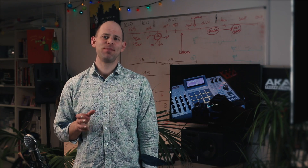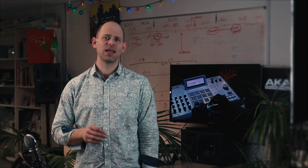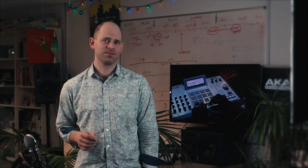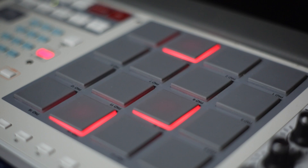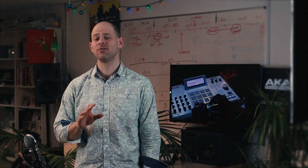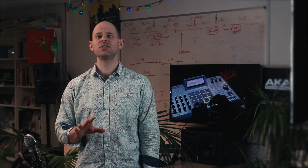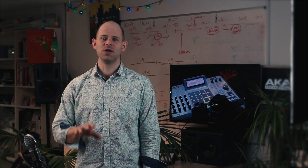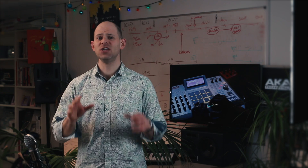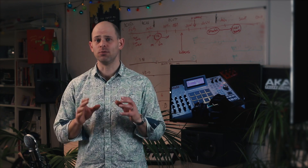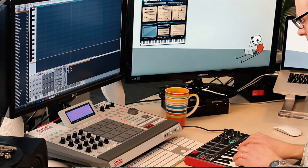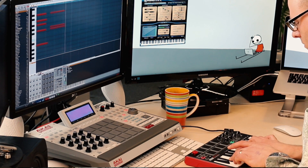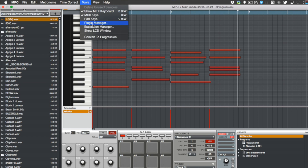MPC 1.8's awesome new Pad Perform mode allows you to map scales and chords across your pads. Perhaps the most fun Pad Perform mode is Progressions, where we've provided a bunch of interesting musical chord progressions that help you record great phrases from scratch. In 1.8.2 we're opening this up so you can create your own chord progressions and inject them directly into Pad Perform mode. It's really easy to do — just record a chord progression onto a track using a MIDI keyboard or the MPC grid editor and select 'Convert to Progression'.